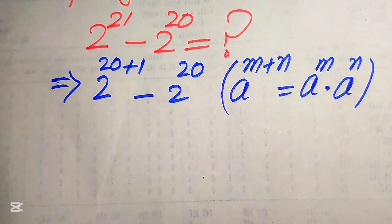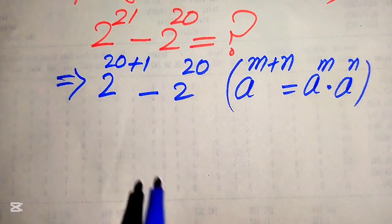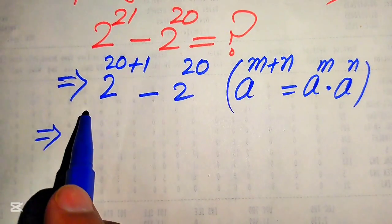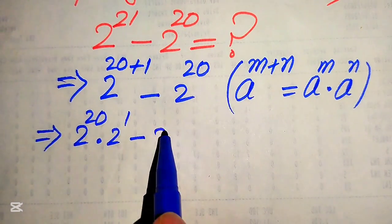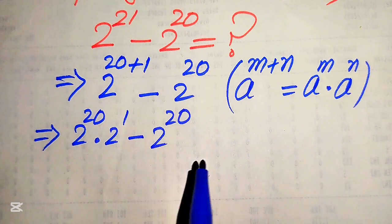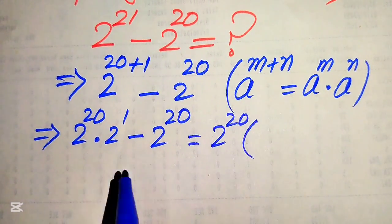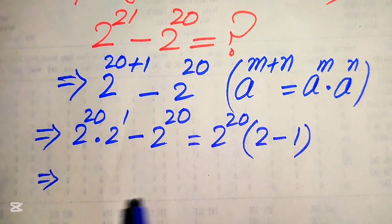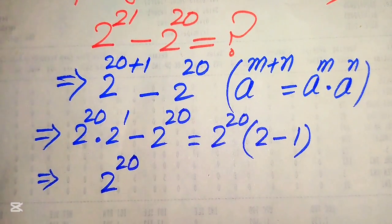According to this exponent law, we rewrite our first term as 2 to the power of 20 multiplied by 2 to the power of 1, minus 2 to the power of 20. Now you see that both terms involve 2 to the power of 20, so we take 2 to the power of 20 as a common factor and get the remaining value as 2 minus 1. Since 2 minus 1 equals 1, we get 2 to the power of 20 only.